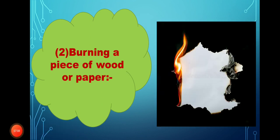Burning a paper or wood — when I burn a paper, can it be reversed or return back again to the same shape of paper? No. So, burning a paper is a chemical change, because it can't return back again to its original shape.